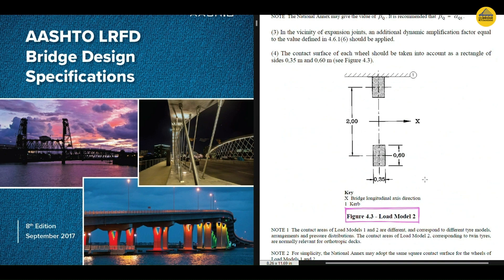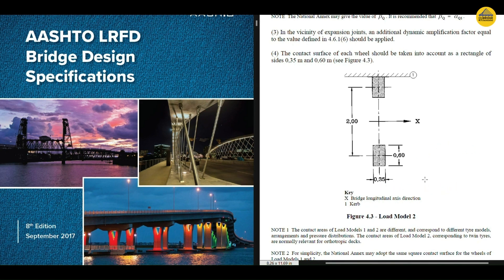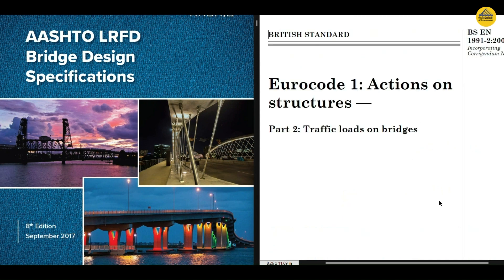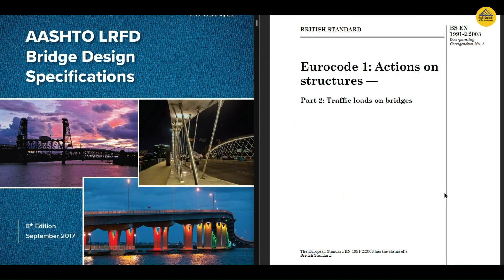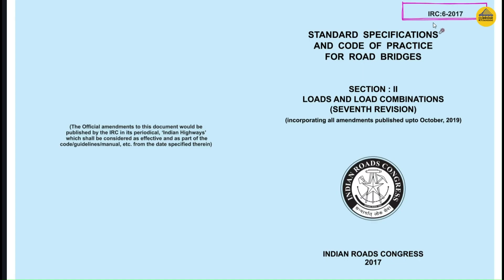On your screen is load model 2 in plan view. You can see that the contact width is 0.6 m and the contact length is 0.35 m, because it is in the direction of traffic movement, which is indicated by the arrow at the top in direction X. So one thing is clear: contact area is clearly mentioned in many codes.